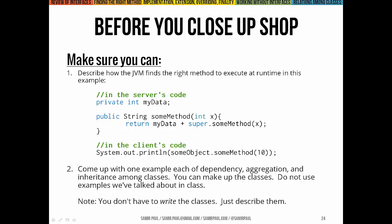Before you close up, a couple things to think about. First, look at the code chunk shown and describe how the JVM is going to find the exact right method to run at runtime. Second, come up with one example each of dependency, aggregation, and inheritance — three examples of relationships among classes. You can make up the classes; you don't have to write code, just think at a conceptual level about what classes might have these three types of relationships.